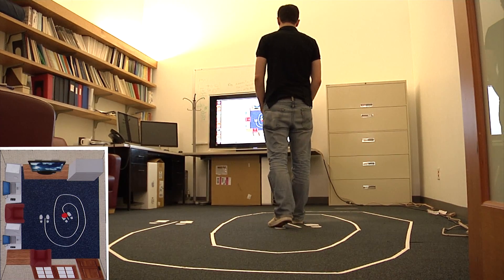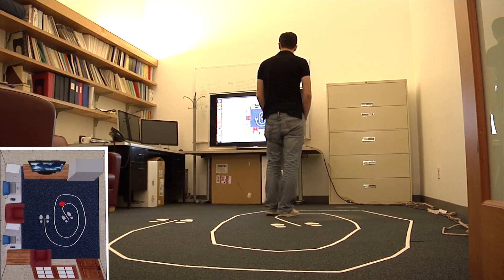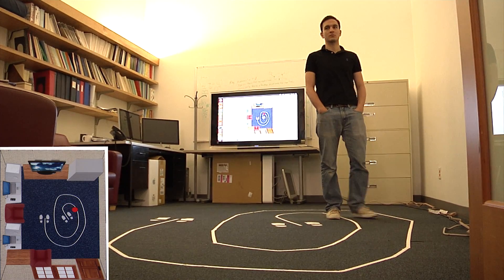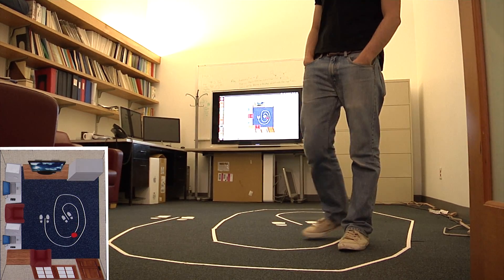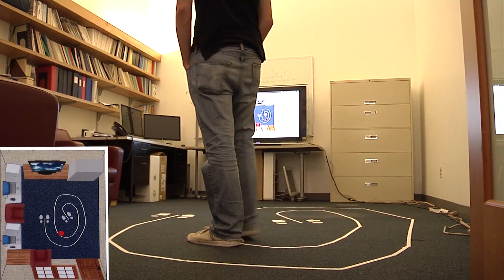In this demo, the person walks on a spiral on the ground as the red dot tracks him in the bottom left corner of the screen. Note that the spiral on the ground is only there to show the accuracy of the system and is not used to aid localization in any way.